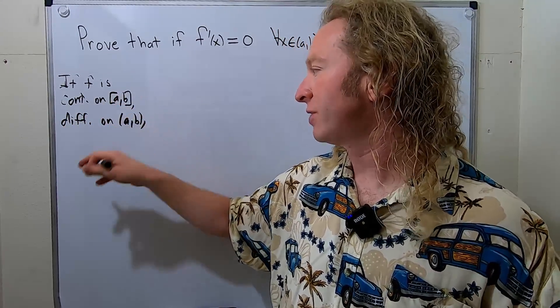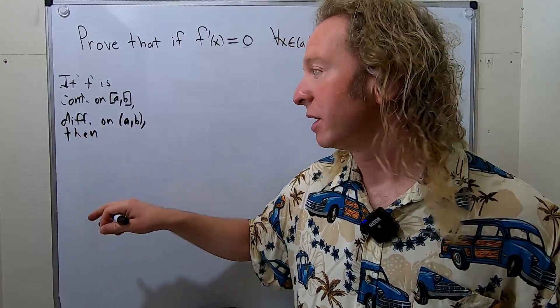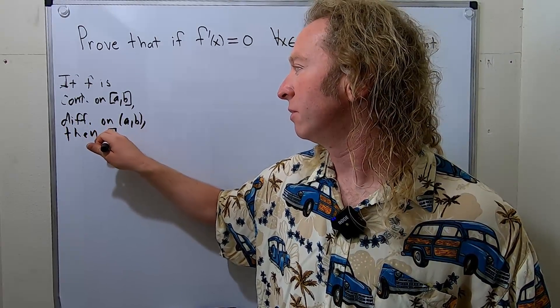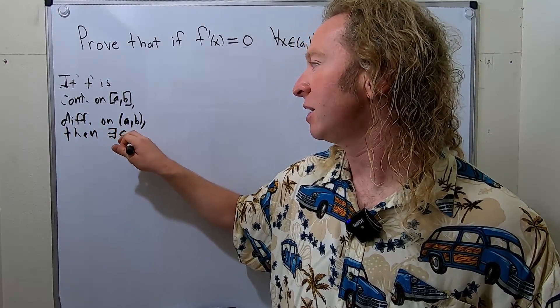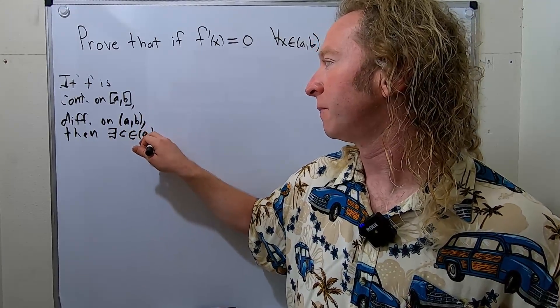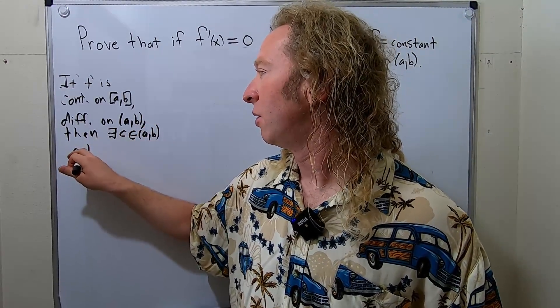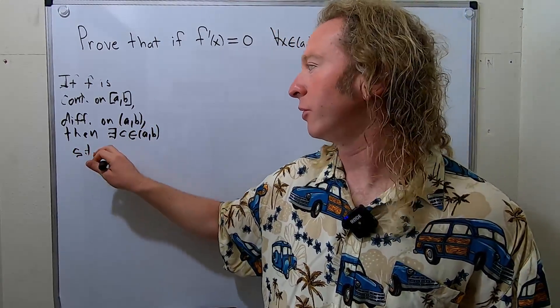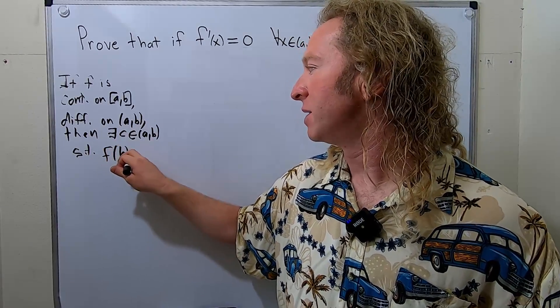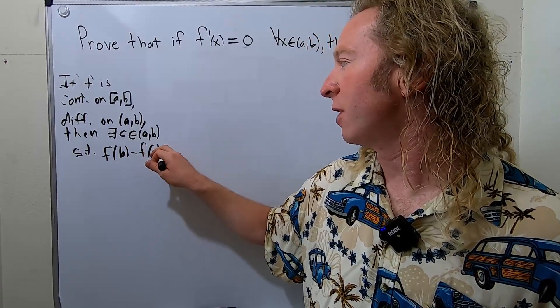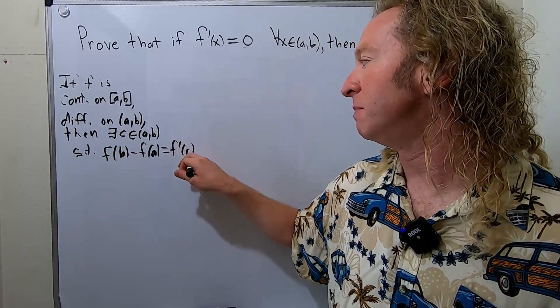If these conditions are satisfied, then the mean value theorem from calculus says that there exists some number c inside the open interval (a,b), such that when you look at the difference, when you look at f(b) minus f(a), that's equal to f'(c) times (b-a).